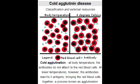What is the classic clinical presentation seen in cold agglutinin disease? The classic clinical presentation of cold agglutinin disease includes painful blue fingers and toes along with hemolytic anemia.